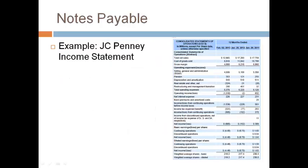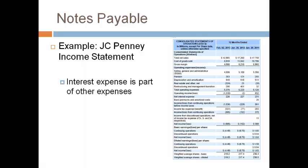The borrower incurs interest expense on a note payable. Take a moment and look at the income statement of JCPenney and determine which line item includes interest expense. The interest expense is reported below operating expenses. JCPenney includes interest in net interest expense. Net means the interest expense is netted against interest income.